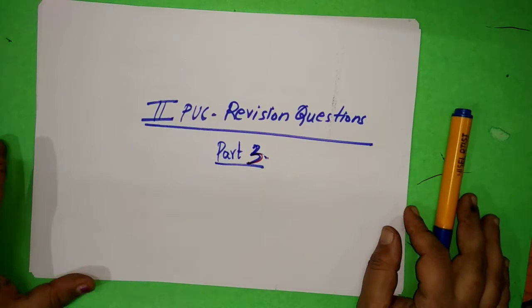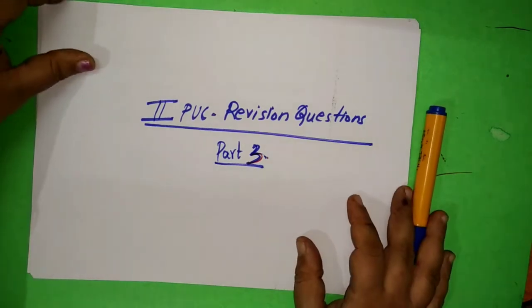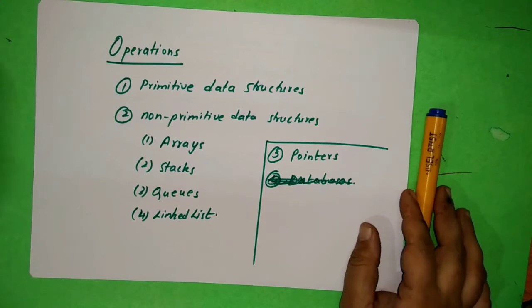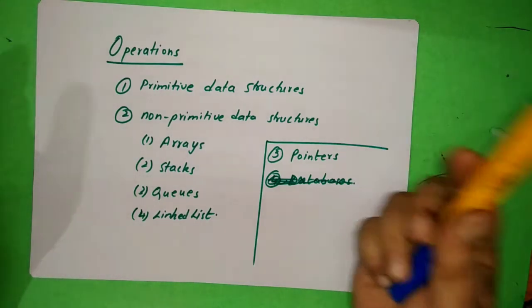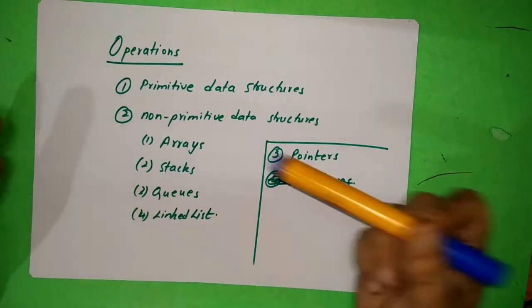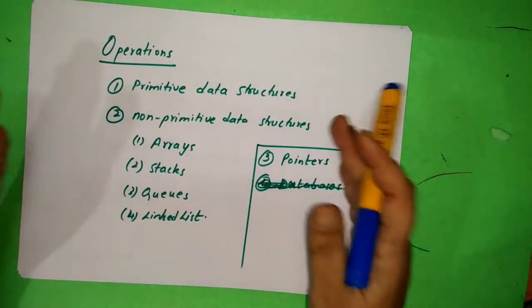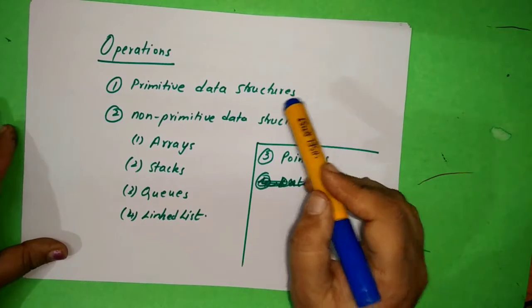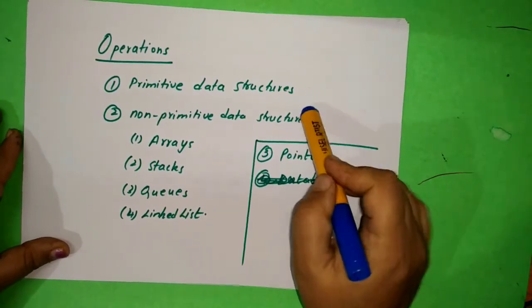Now let us look at some of the revision questions. I put it as part 3 here. I'm going to talk about data structures. I'm doing a detailed video on data structures, but since some exams are there, I'm just doing it now in a quicker way. So primitive data structures, non-primitive data structures - I've already explained in my video.